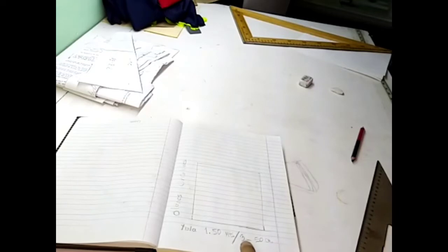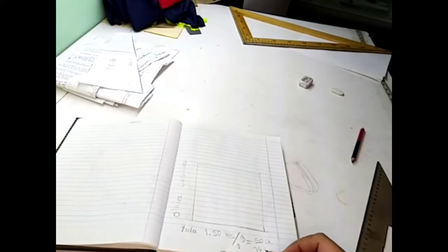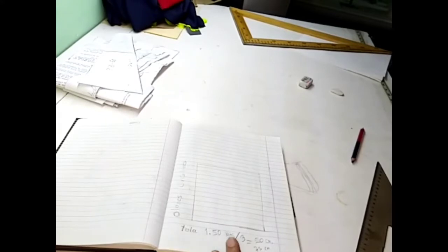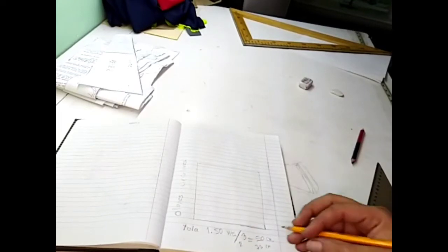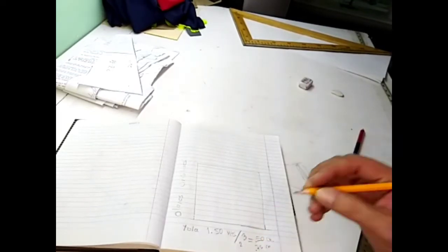Otra opción que tú pudieras hacer, cortar el 1.50 del ancho de tu tela y lo vas a dividir entre dos. Te quedaría, si lo divides entre dos, te quedaría de 75 centímetros. Aquí es 0.50, 0.75.